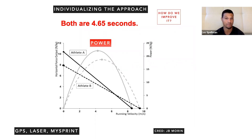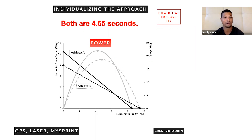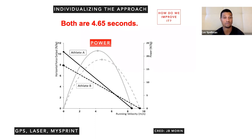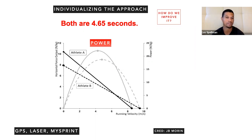Individualizing this approach: both athletes run a 4.65 40-yard dash. Athlete A has a higher force and a lower velocity, while Athlete B has a lower force and higher velocity. Our outcome is looking at power — how much power can they produce? Athlete A has very high force and lower velocity and produces higher power; Athlete B produces a little bit lower power. To make both athletes better, we're going to look at different approaches. Athlete A needs to maintain their horizontal force component while increasing their velocity, and Athlete B needs to maintain their velocity while increasing their horizontal force. If both athletes could reach 10 for horizontal force and 10 for velocity, we're looking at a very robust athlete.